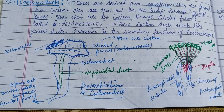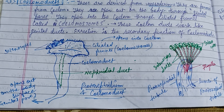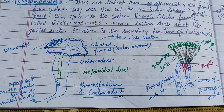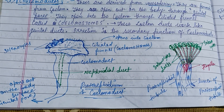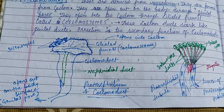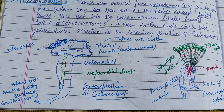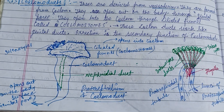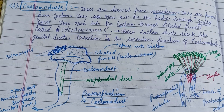The figure describes this better: the ciliated funnels, also known as coelomostomes, open into the coeloms. While the coelomoduct, also known as protonephridium, opens out of the body's surface through a genital pore.